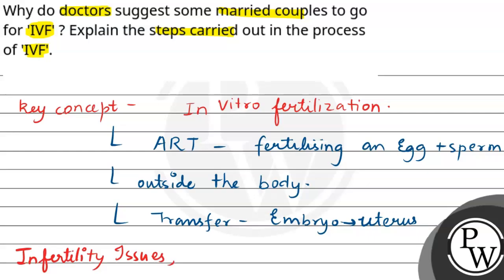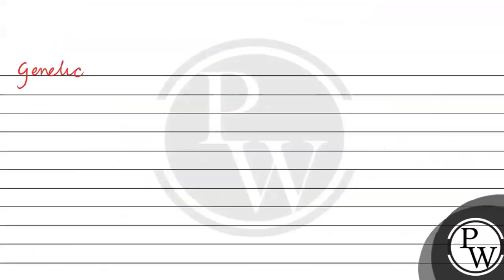Another reason is unexplained infertility. Sometimes many tests are done but no cause is found, so in those cases IVF is recommended. Additionally, couples who have a risk of passing on a genetic disorder to their children may also be advised to go for IVF.